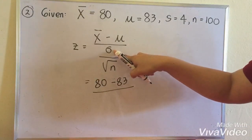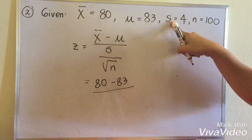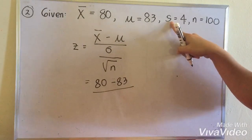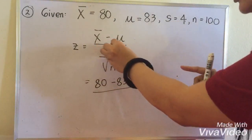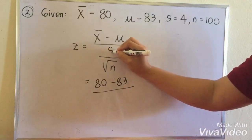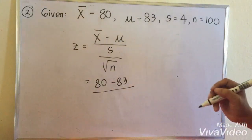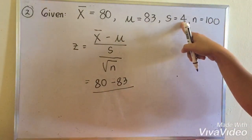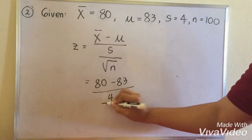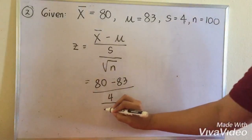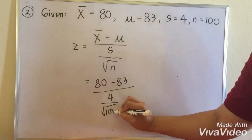Since we don't have our population standard deviation, and we only have our sample standard deviation, we can exchange sigma into s because they are just the same. Our sample standard deviation is 4, over the square root of our sample size, which is 100.